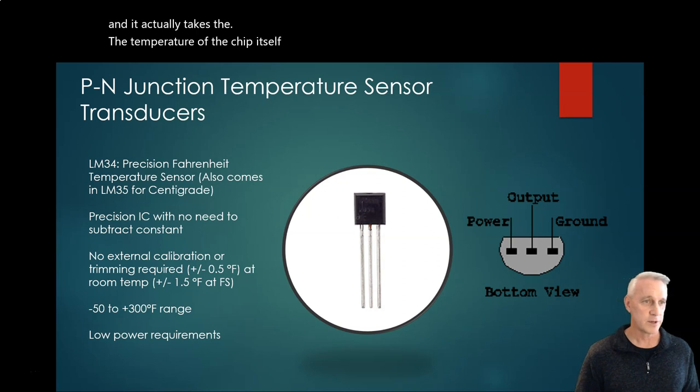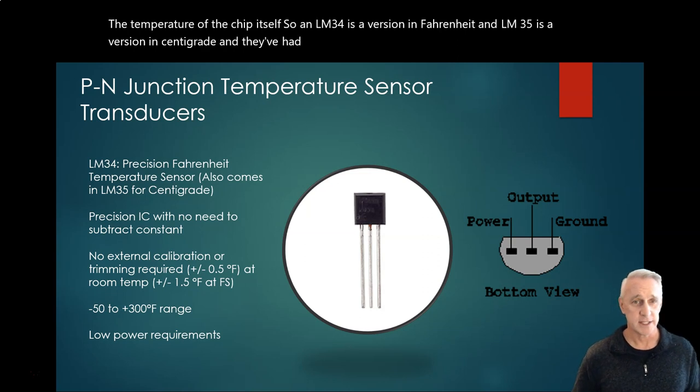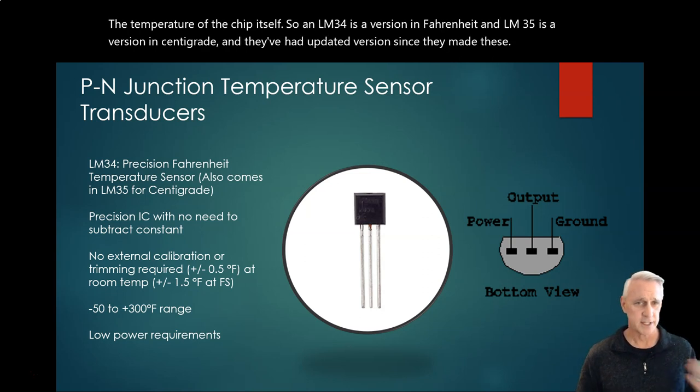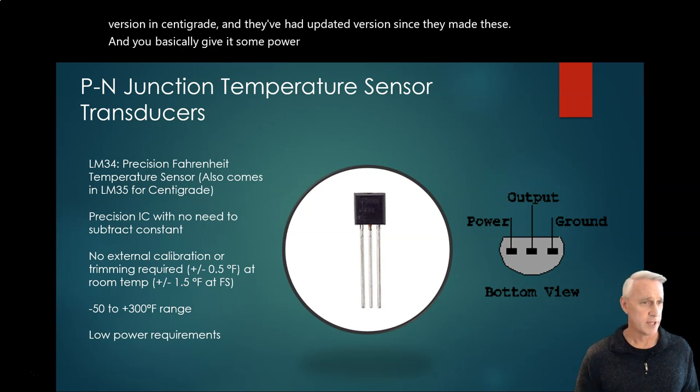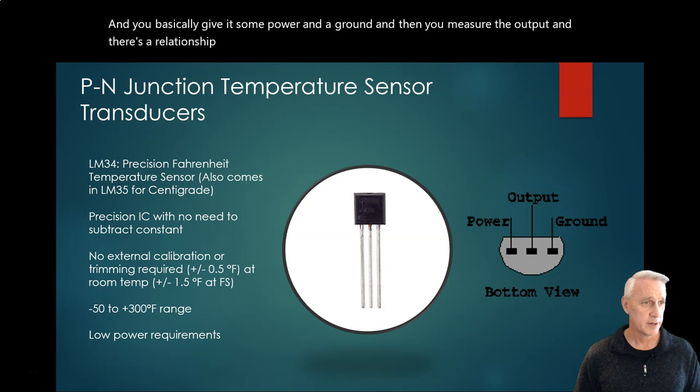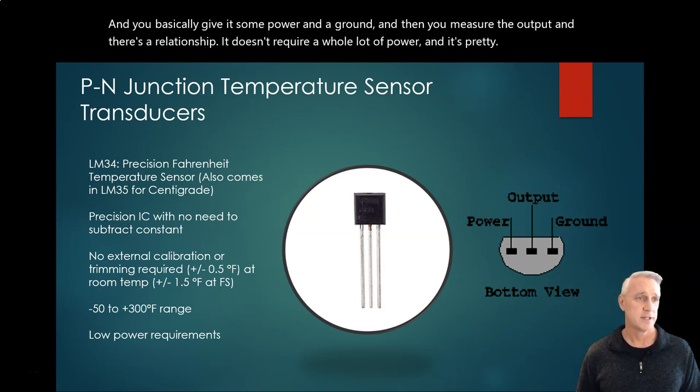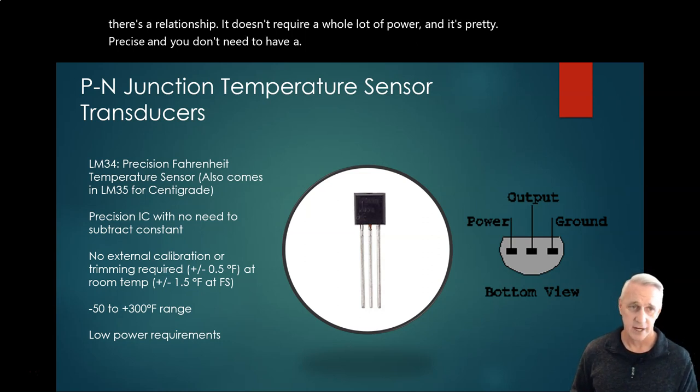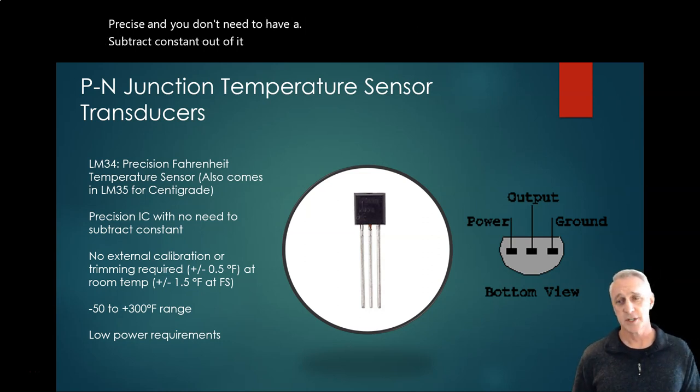An LM34 is a version in Fahrenheit, an LM35 is a version in centigrade, and they've had updated versions since they made these. You basically give it some power and a ground and then you measure the output. There's a relationship. It doesn't require a whole lot of power, and it's pretty precise, and you don't need to have a subtract constant out of it - it's all built into the chip. That's about as easy as it gets.